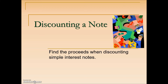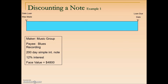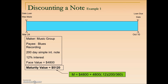Let's look at examples of finding the proceeds when we discount a simple interest note. The maker is the music group; the note holder loaning the money is Blues Recording. It's a 200-day simple interest note, interest rate of 12%, and a face value of $4,800. It started on March 24th. The maturity value is found by taking principal times rate times time expressed as a year, arriving at a maturity value of $5,120.